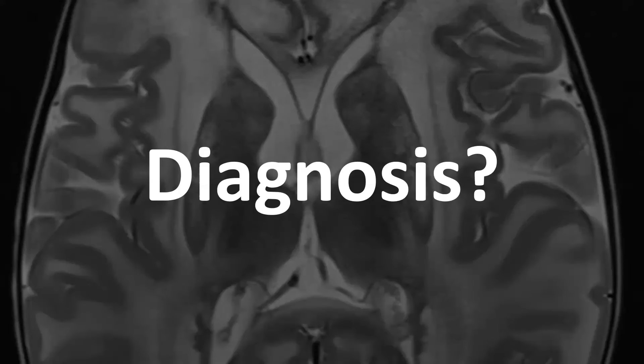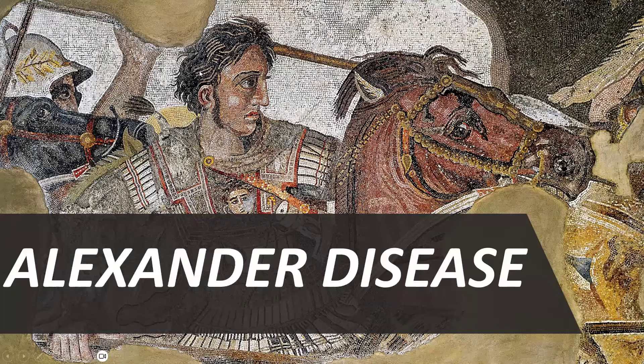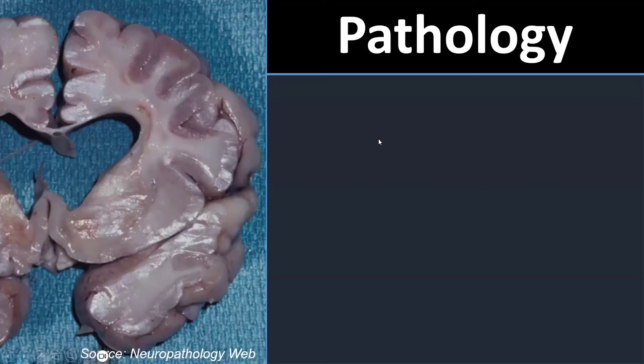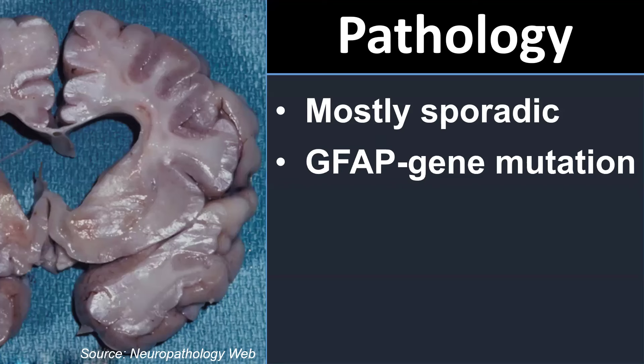What is the diagnosis in this child? It is Alexander disease. What is Alexander disease pathologically? It is caused by mutations in the GFAP gene — the glial fibrillary acidic protein gene — but it's mostly sporadic. So it is rarely inherited and rarely has a familial history. Contrary to what you would expect, on a cellular level it does not primarily involve the white matter — it does not directly involve the oligodendrocytes or the myelin sheet.